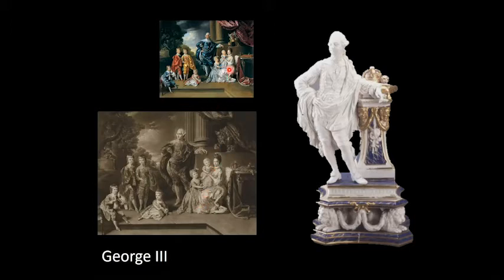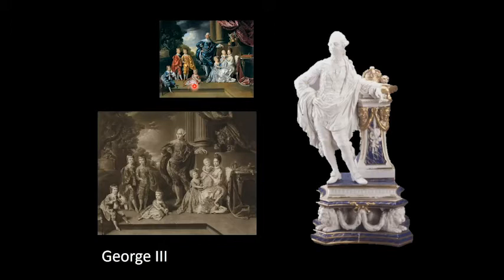In the portrait, Queen Charlotte holds Princess Sophia Augusta. At her side stands Princess Charlotte Matilda. On the left we have George, the Prince of Wales, and his brother Prince Frederick. In front, Prince William holds a bird, and Prince Edward Augustus plays with a dog, still dressed as a toddler. During this period of history, young boys and girls were dressed in a similar fashion — it was not until around the age of five or six that boys would start to wear breeches.